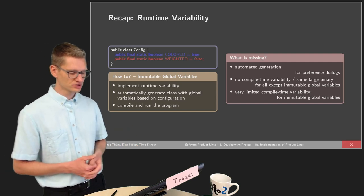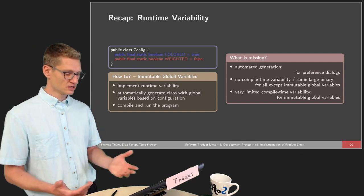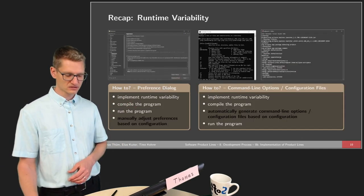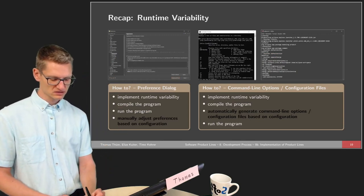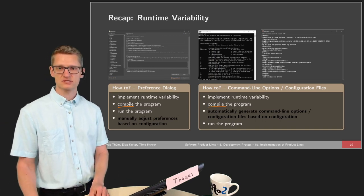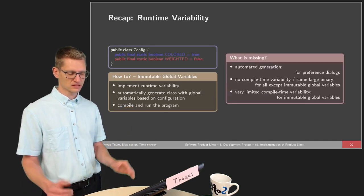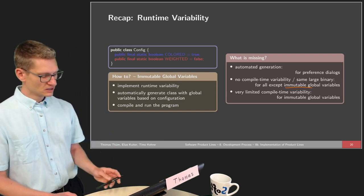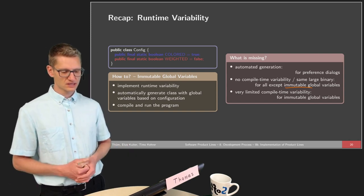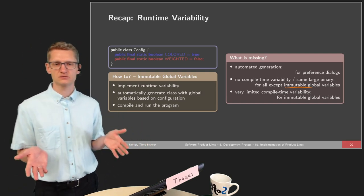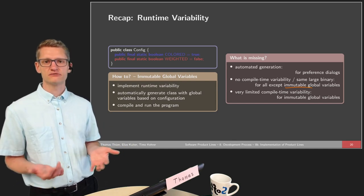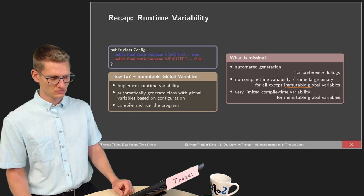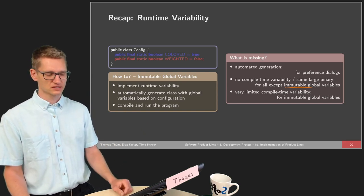What is missing for all those approaches is automated generation — we do not have this for preference dialogs. When it comes to compile-time variability, in most cases we still have the same large binary because the program is compiled before we make the decision on which features we have. So we always have the same large binary, with only very limited compile-time variability for immutable global variables. Runtime variability is not well designed for having different products or selling products for resource-limited systems like embedded systems.